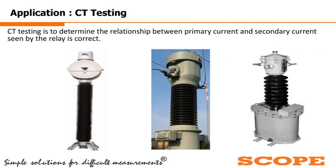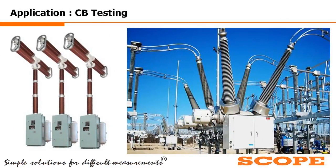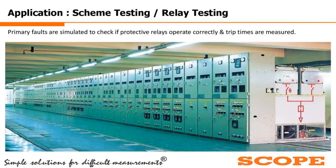The applications of the primary current injection test set: first is CT testing — with the primary current injection test we can test a CT to determine whether the relationship between primary current and secondary current seen by the relay is correct or not. The second application is CB testing — we can directly inject rated current through the circuit breaker and check the CB behavior: whether it trips beyond the rated current limit.